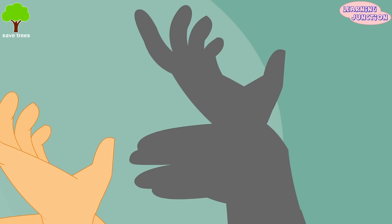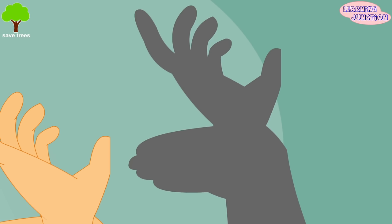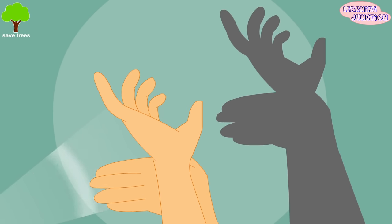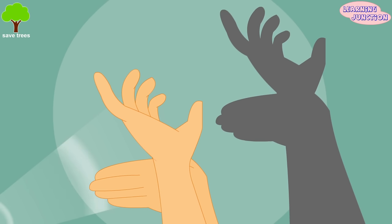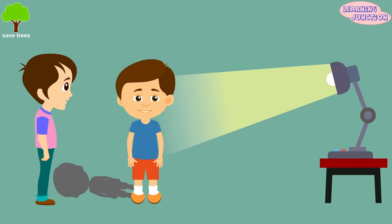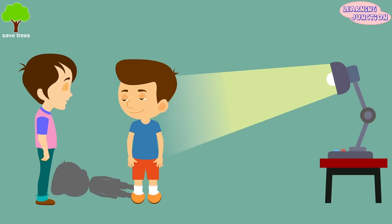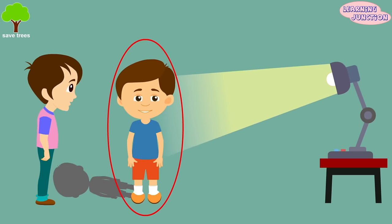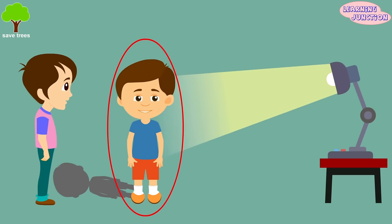A shadow is the dark shape made when some object blocks the light. You must have a source of light in order to have shadows. Any object — non-living or living — that can block light can cast shadows. Stand in the way of a beam of light from a torch and ask your friend to stand behind you and spot the beam of light. Your friend will see no light since your body did not allow it to pass through.